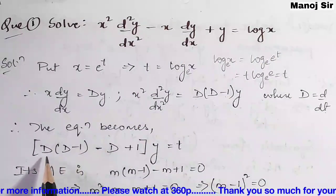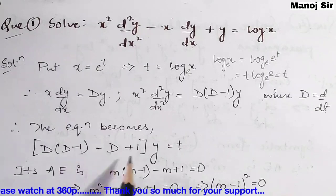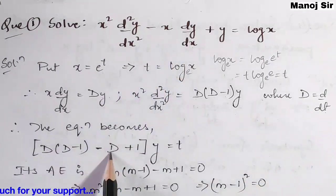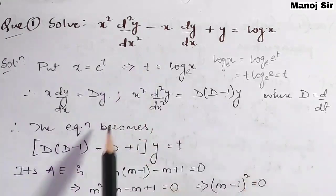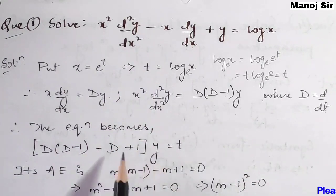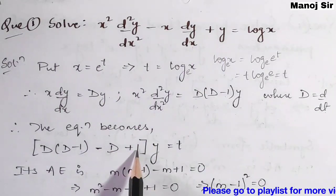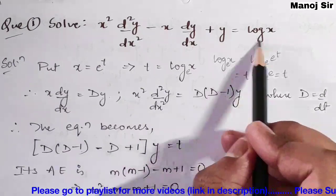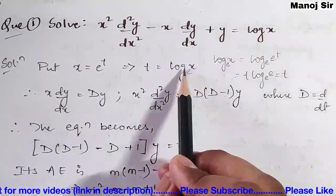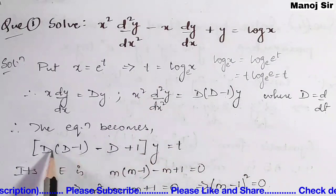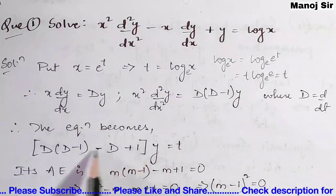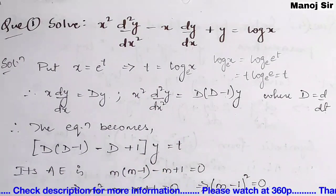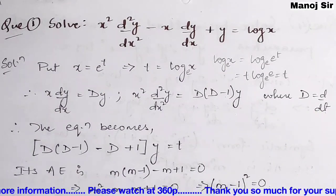The equation becomes D(D minus 1)y minus Dy plus y equals t, since log x equals t. Taking y common, the left-hand side becomes D(D minus 1) minus D plus 1, all times y, equal to t. This is the transformed equation in symbolic form.